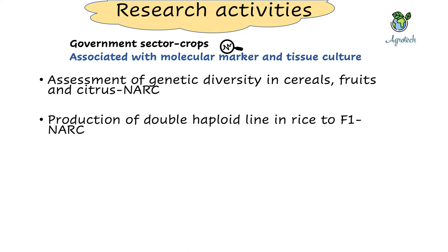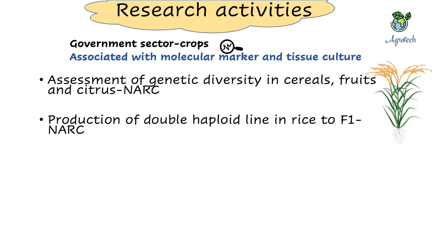Another interesting example is the production of double haploid lines in rice, developed up to the F1 generation through NARC. Rice is a self-pollinated crop with a higher chance of inbreeding depression, so double haploid lines are really helpful to avoid inbreeding depression. This is one of the most interesting works done at NARC.